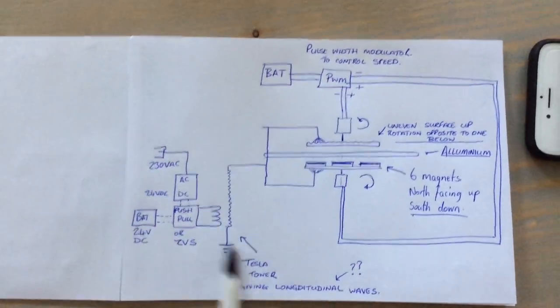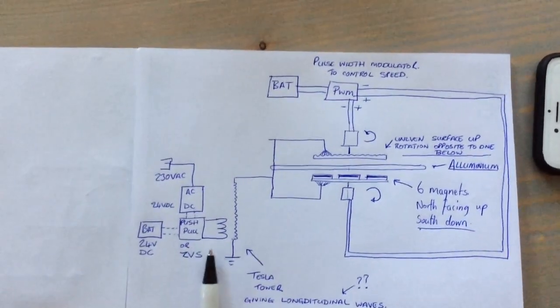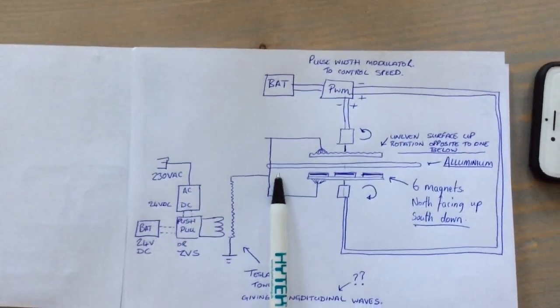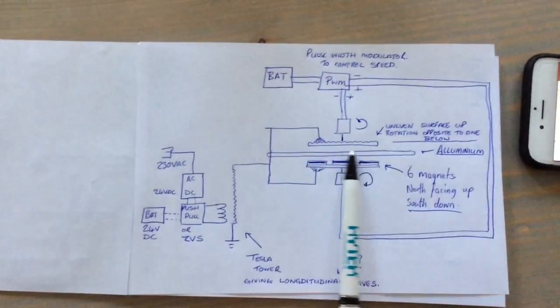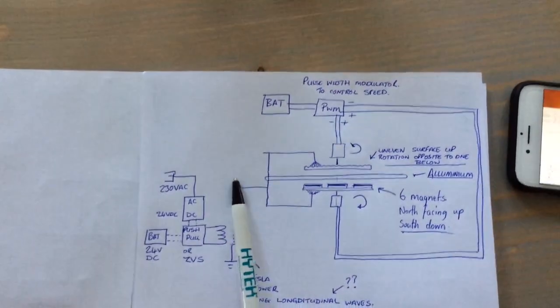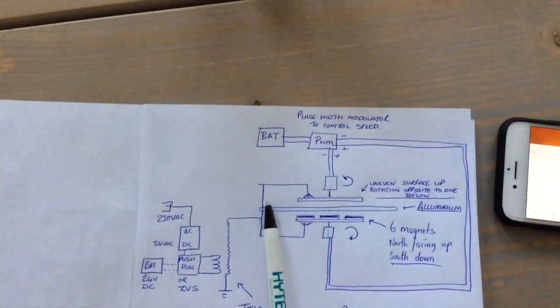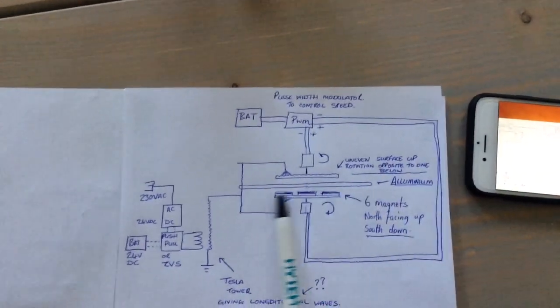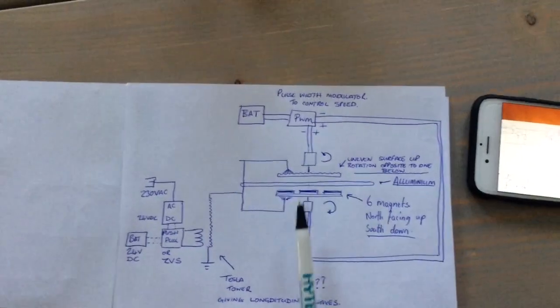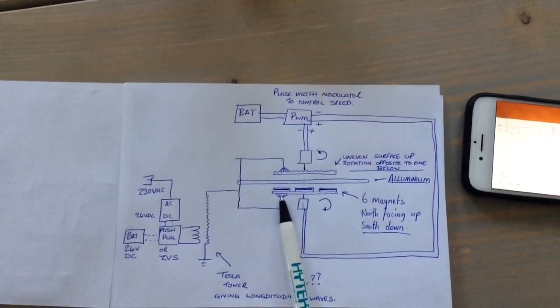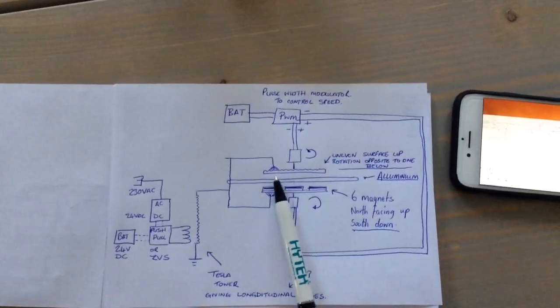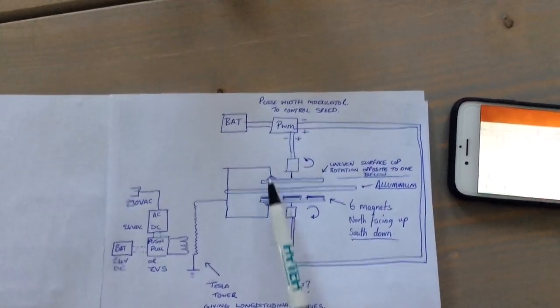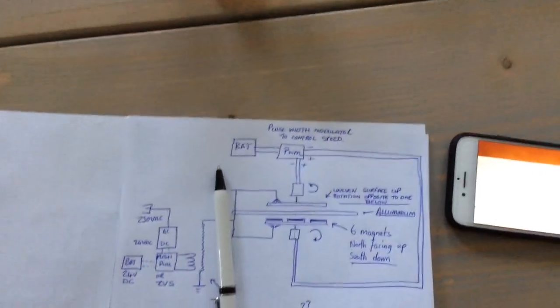So what I have is my own kind of explanation. What is using is a Tesla tower giving longitudinal waves into the aluminum here, acting as instead of an aluminum top load on top of the Tesla tower. It's going straight to the aluminum here, the plate of the disc, and also coming out to the aluminum on these two.